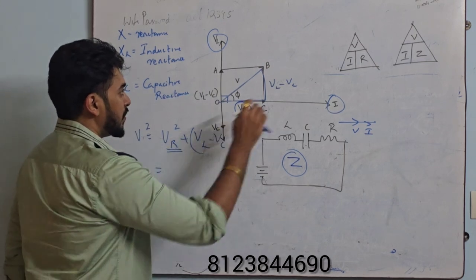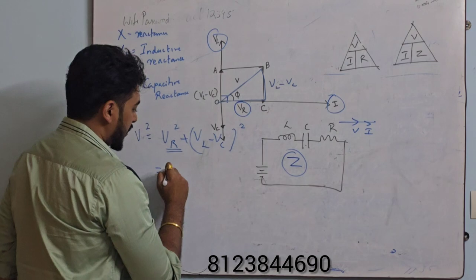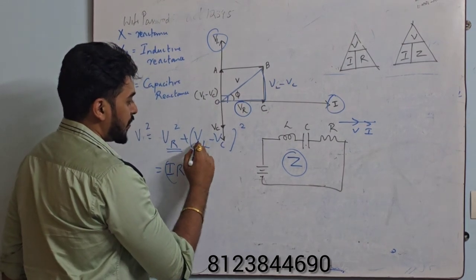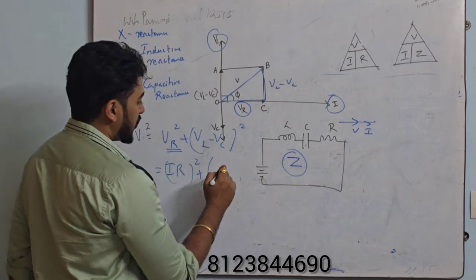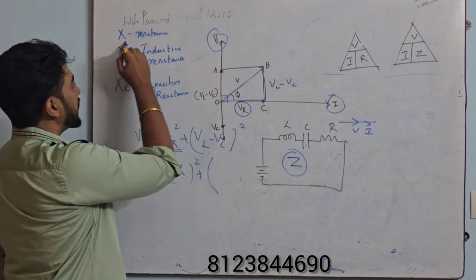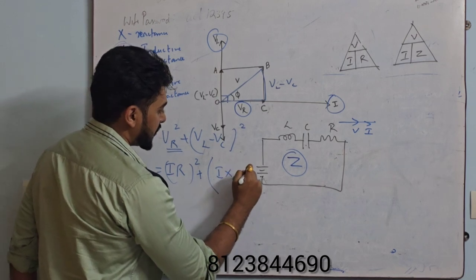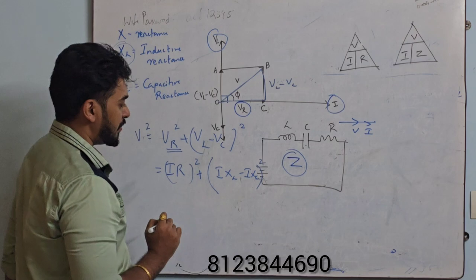What is my VR? Again go to this triangle, hide this V. What is there? IR. So IR whole square. And what is my VL? I cannot write IL, so instead of IL I will put I × XL. So VL = I × XL. And VC = I × XC whole square. This I will substitute.